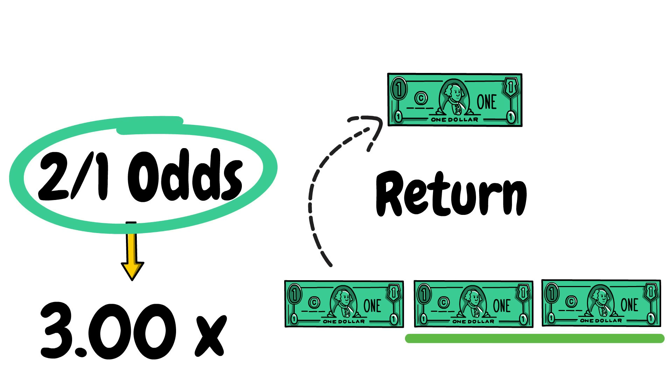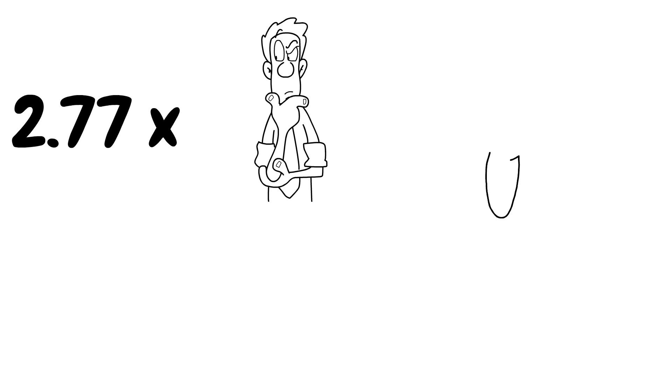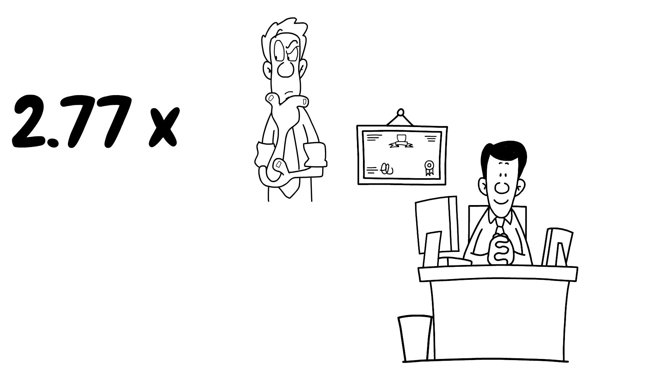Instead of a 3x return on your money, what about a 2.77x return on your bet? Don't worry, I've not just picked that number out of the sky. I'll explain in a moment how we can get these odds. Veterans at the roulette table might already know the answer to this. So how would a 2.77x return on your money perform when playing the Fibonacci sequence?